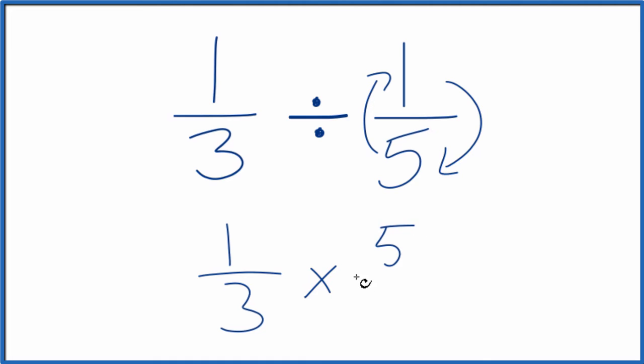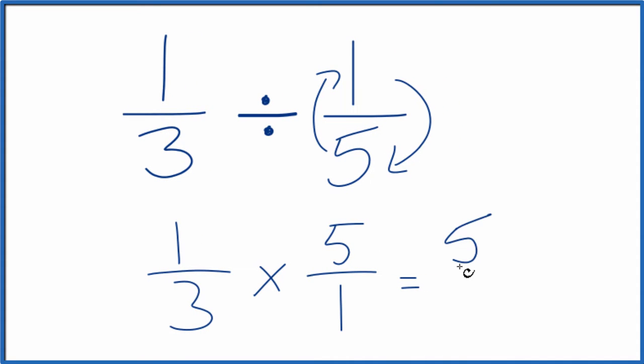So we move the 5 to the top, and the 1 that goes down to the bottom, that's the reciprocal for 1/5. And now we can multiply 1 times 5, that's 5, and 3 times 1, that's 3.